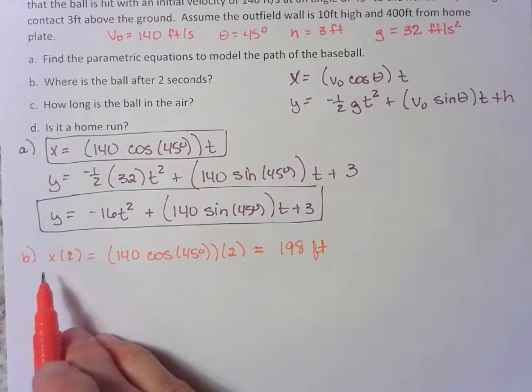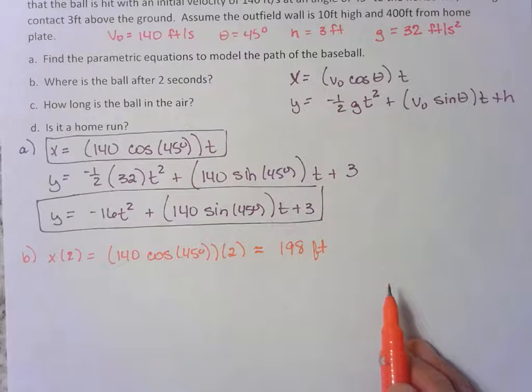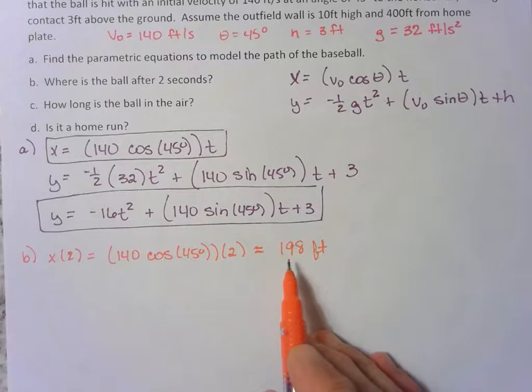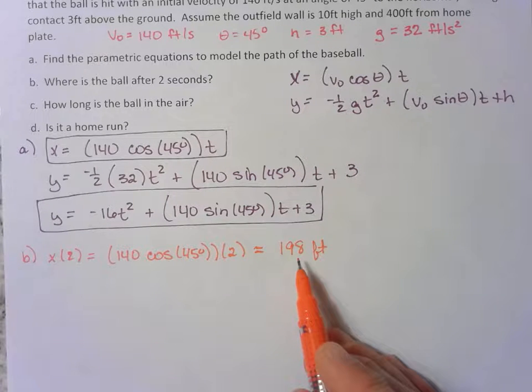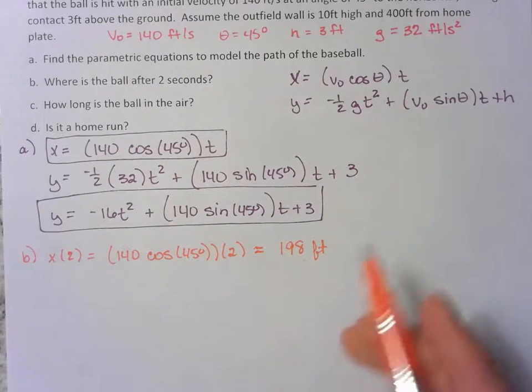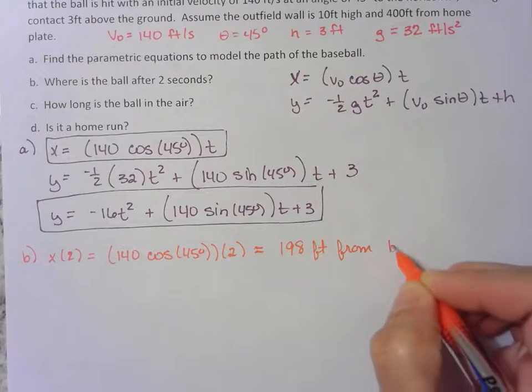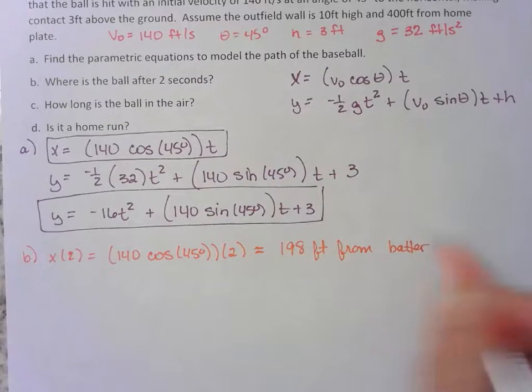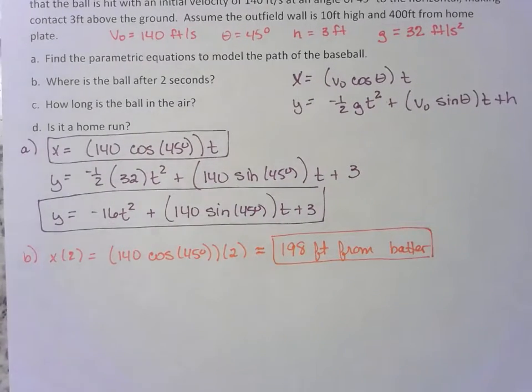Now remember, x is going to be the horizontal, right? So it's 198 feet from the original location. Well, didn't the ball start from where the bat hit it? So it's 198 feet from the batter. You can even say from the batter's box.